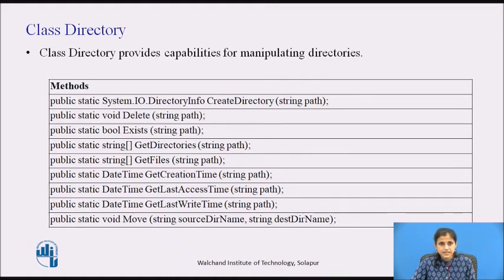The GetCreationTime method returns the creation date and time of a directory. The GetLastAccessTime method returns the date and time the specified file or directory was last accessed. The GetLastWriteTime method returns the date and time the specified file or directory was last written to. The Move method accepts two parameters — source directory name and destination directory name — and moves a file or directory and its contents to a new location.